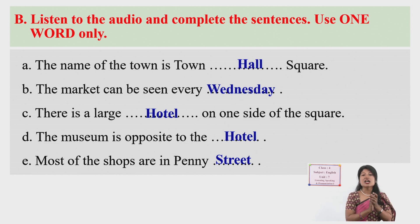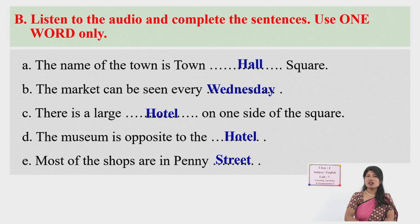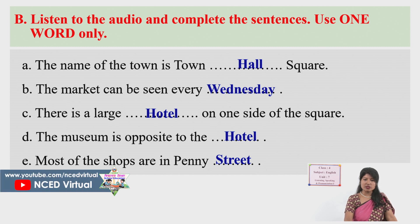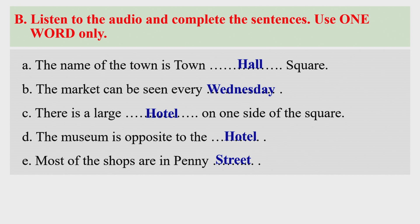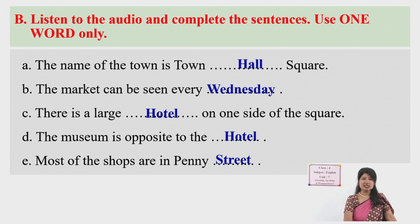All of you must have guessed smartly. Now I am going to play it for the third time to confirm all the answers. What's your town like? Well, it's quite old. There's a big square in the town centre called Town Hall Square. There's a market every Wednesday. On one side of the square there's a big hotel. Opposite the hotel there's a museum. The shops are next to the hotel in Penny Street. Most of the shops are there. We have finished with listening activity B.